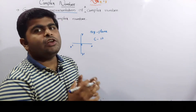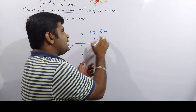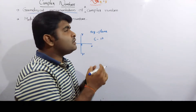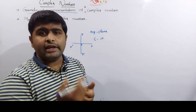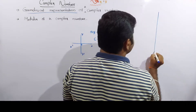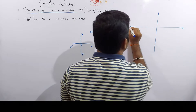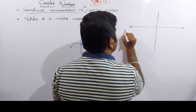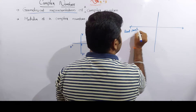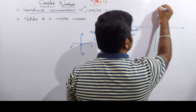The Argand plane is very important. If you want to represent the xy-plane, you can represent the x-line and y-line. What is the complex number? You can draw a line. What you want to represent is the real part line.